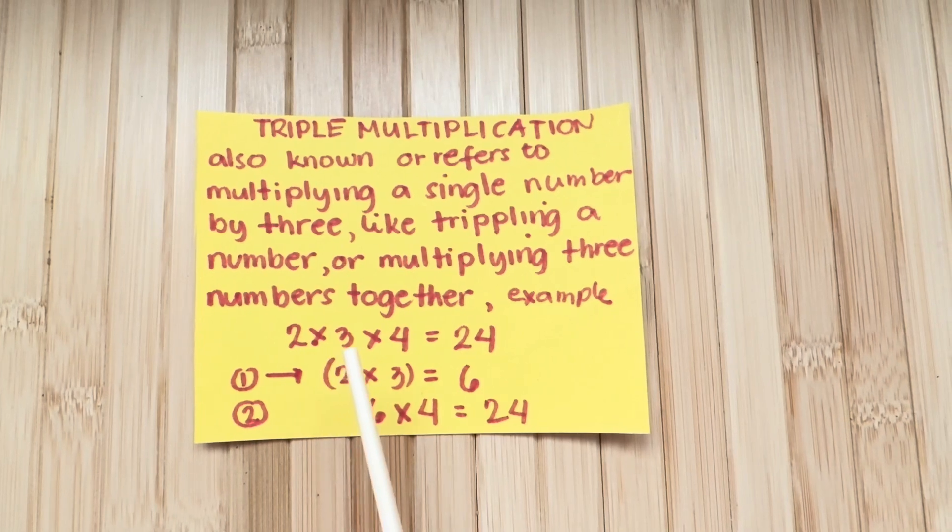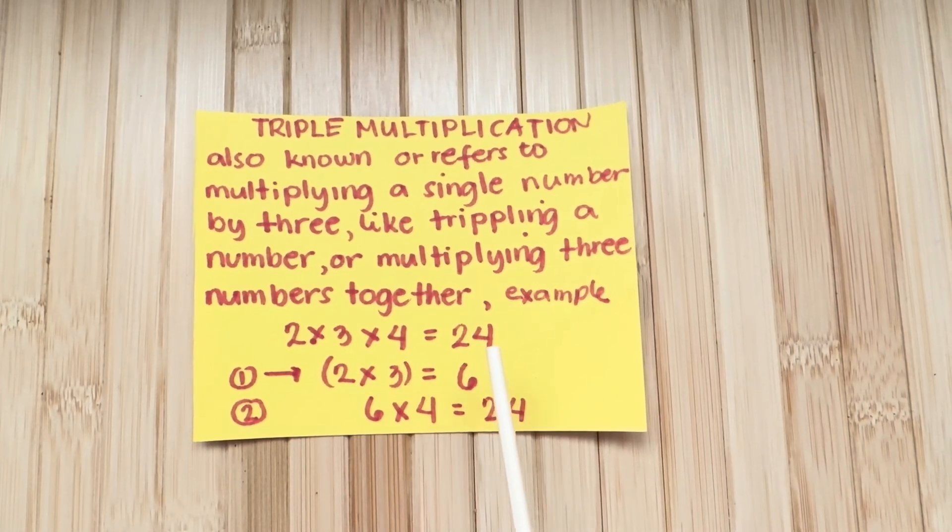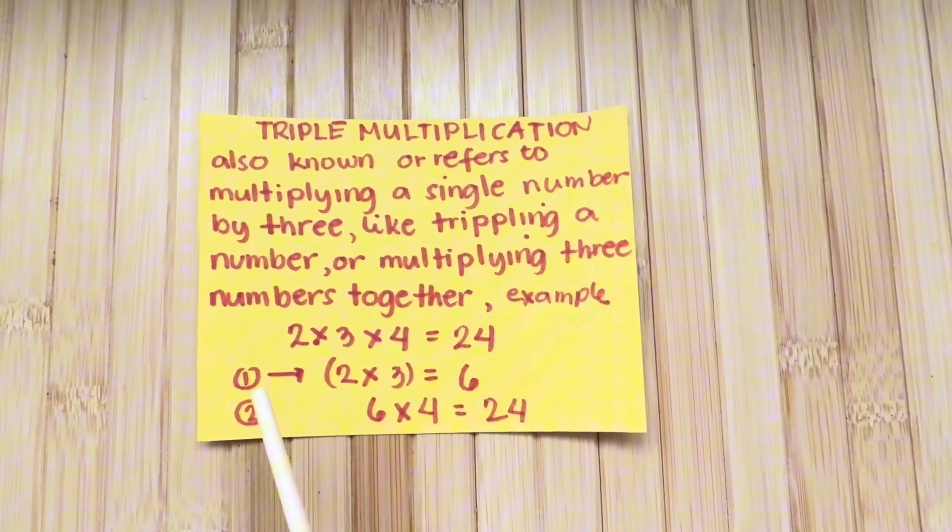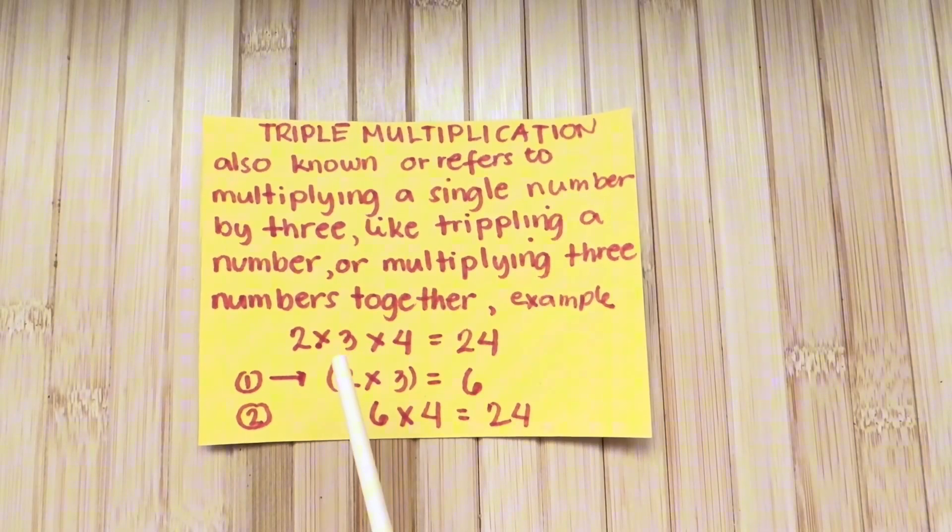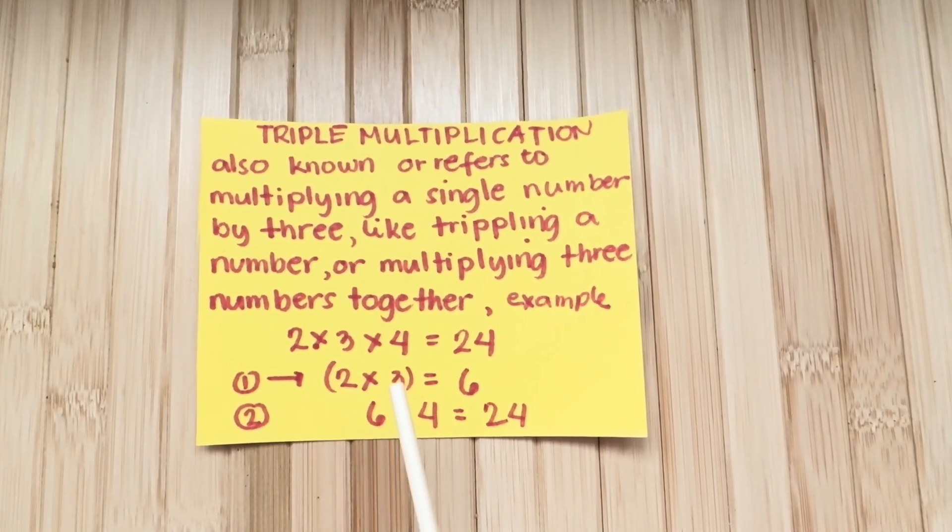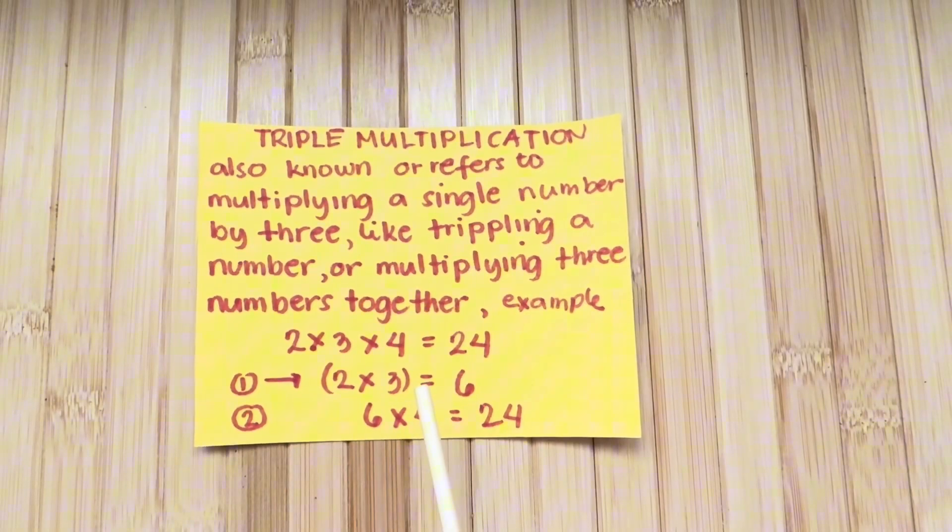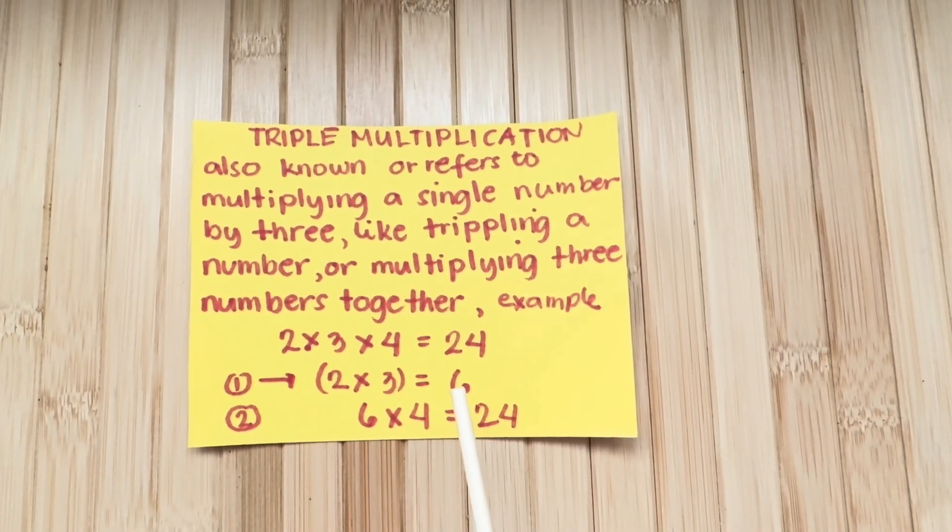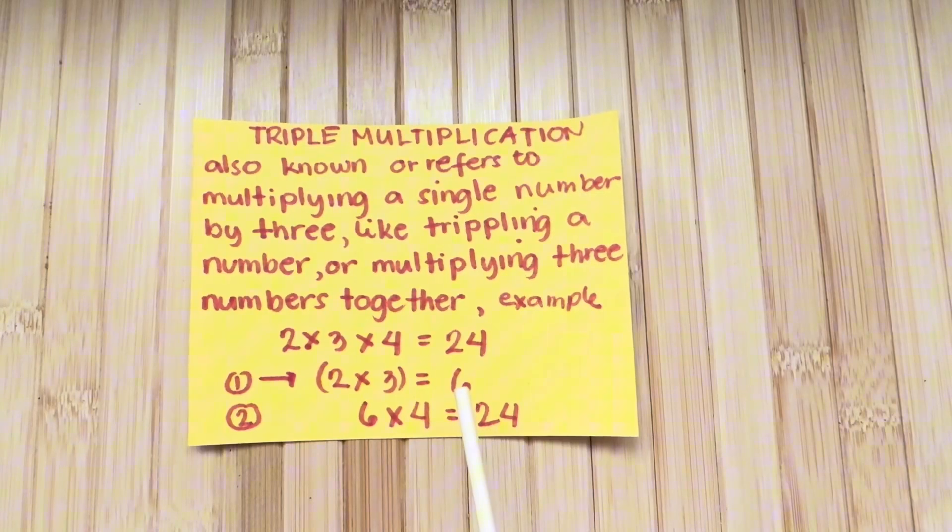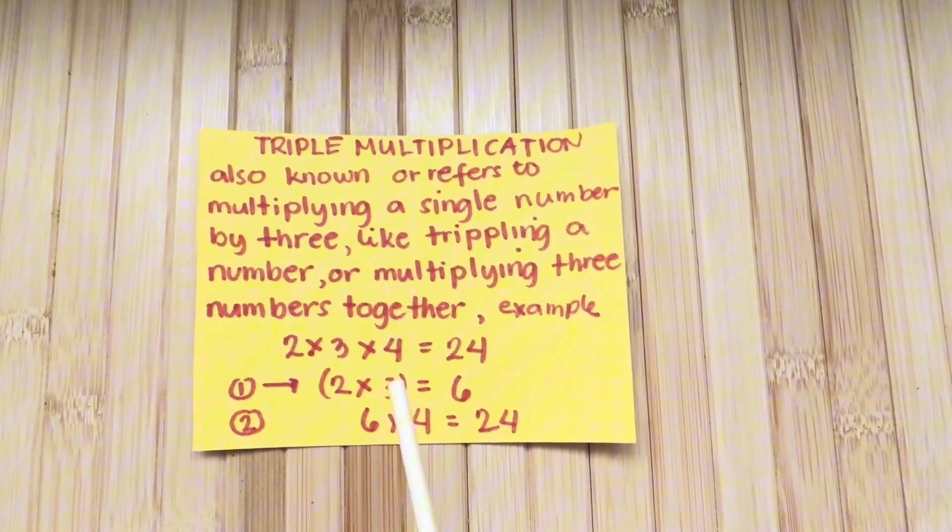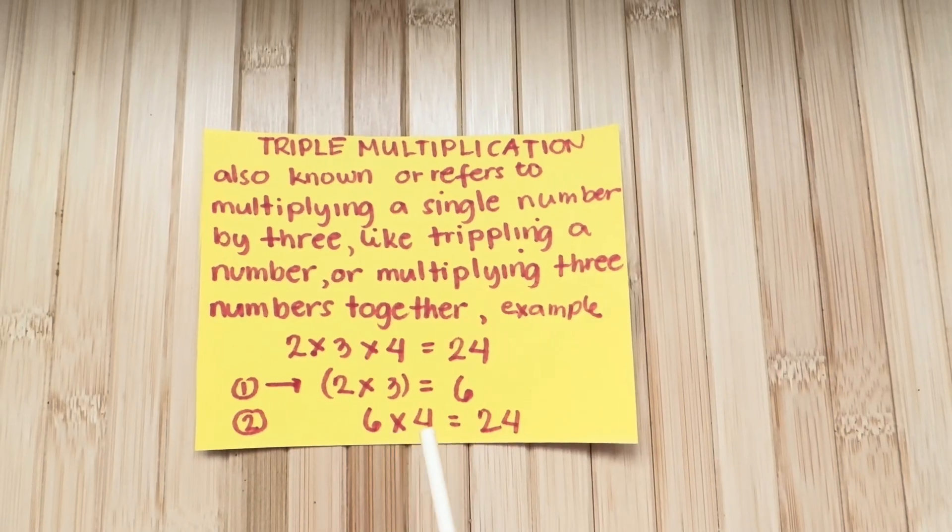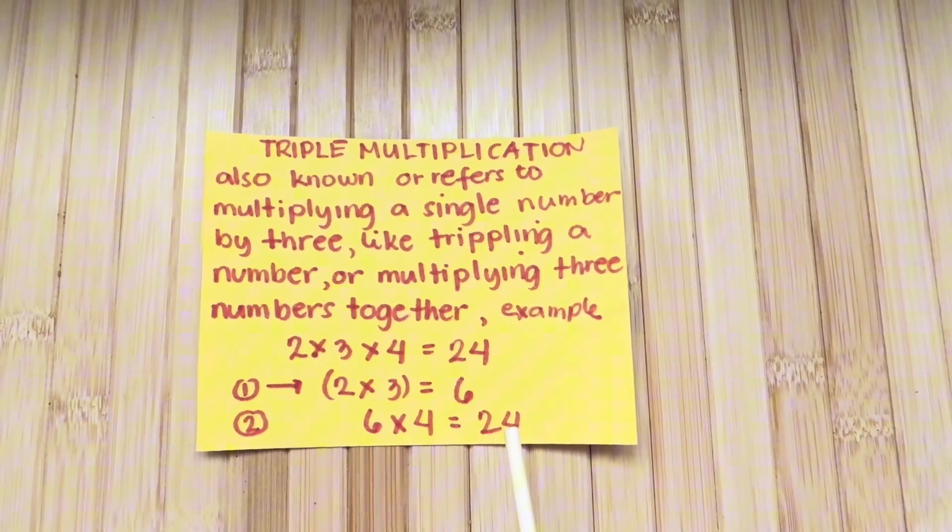2 times 3 times 4 equals 24. First step, let's multiply the first two numbers, which is 2 times 3 equals 6, wherein 6 is the product. And step 2, let's multiply it by the third number. 6 times 4 equals 24.